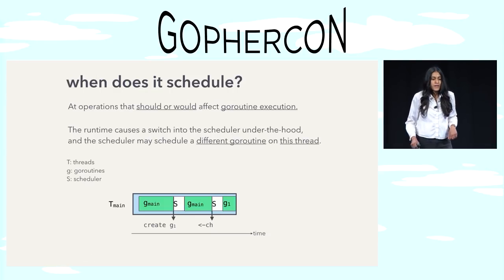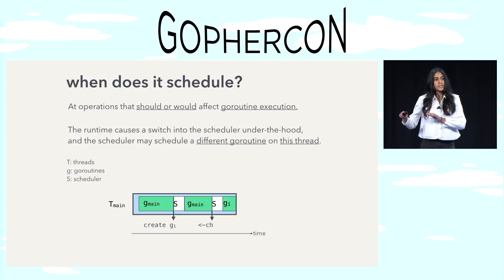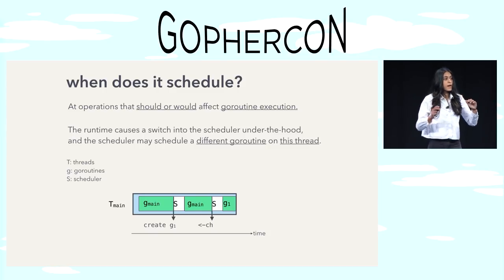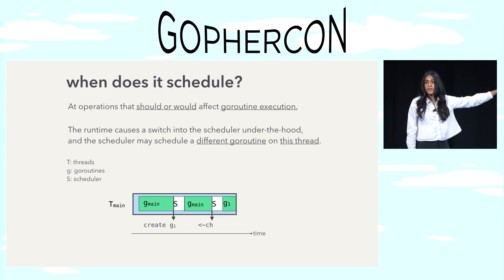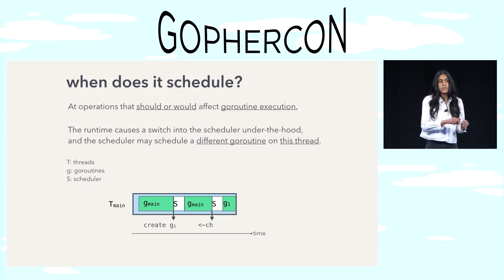Before we move on, a quick picture. This is how the scheduling works — when the Go routine makes a call that switches into the scheduler, under the hood the runtime switches your program into the scheduler at those events: the create event and the channel receive. What the scheduler does at this time: it might continue running the same Go routine on the thread — this is what happens when you create a Go routine, so G main keeps running on the main thread. In the case of a channel receive, however, we want the Go routine to block, so G main is switched out for G1.